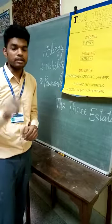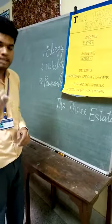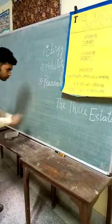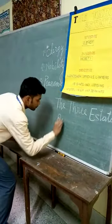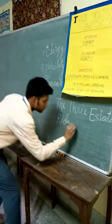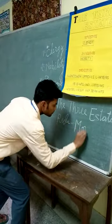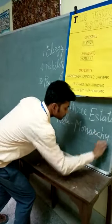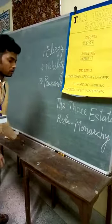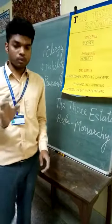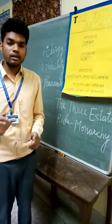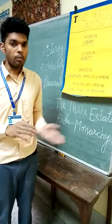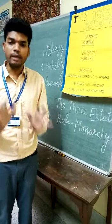There was a ruling system, so called Monarchy. The ruling system was Monarchy, which means power in the hands of one ruler. Monarchy is opposite to democracy.